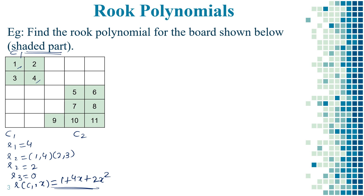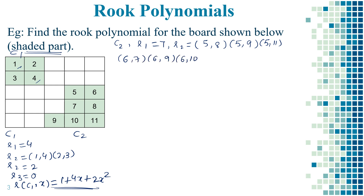Now let's find the rook polynomial for board C2. R1 equals 4 plus 3, so R1 equals 7. R2 can be calculated with placements: (5,8), (5,9), (5,11), (6,7), (6,9), (6,10), (7,9), (7,11), (8,9), and (8,10). These are all the possibilities for the placement of two rooks. Counting them: 1, 2, 3, 4, 5, 6, 7, 8, 9, 10. Hence R2 equals 10.